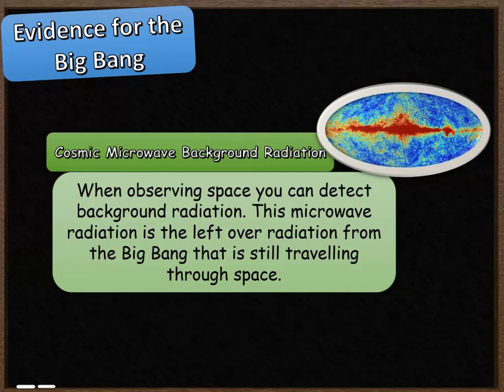The second piece of evidence we're going to look at is the cosmic microwave background. When you observe space you can detect this background radiation — it's a microwave radiation type, and this is the radiation that's been left over from the Big Bang and it's still travelling through space today. So when we make observations of radiation in space we can detect this microwave background, and that's the remnants — that last little bit of radiation left over from the Big Bang.